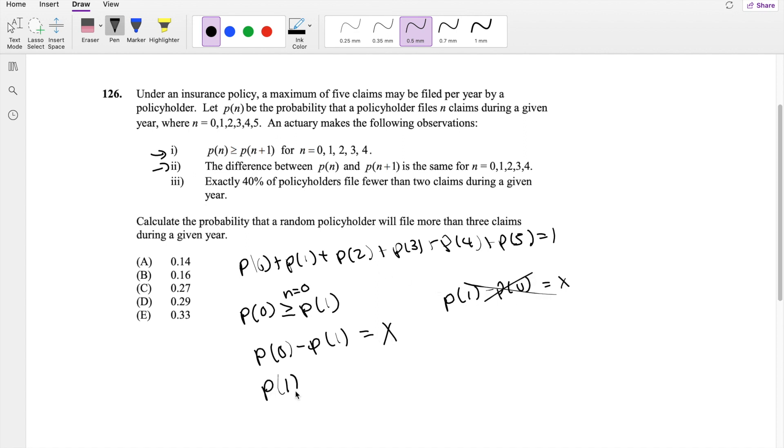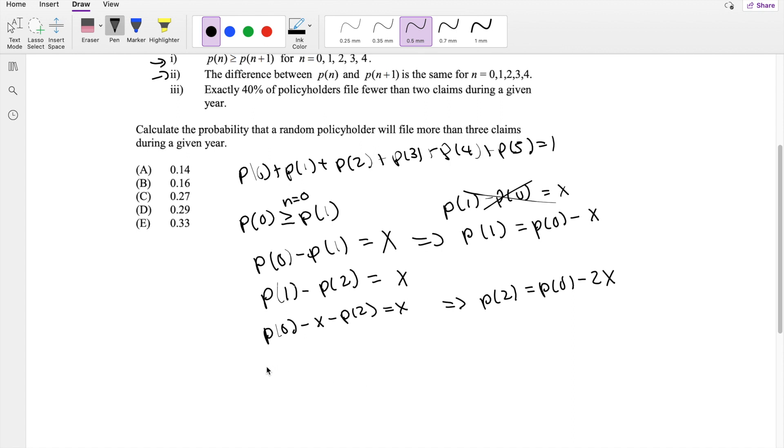Likewise, the probability of 1 minus probability of 2 is equal to x. So solving this for probability of 1, you actually get this is equal to probability of 0 minus x. And likewise, if I plug in here, the probability of 1 is equal to probability of 0 minus x minus probability of 2 is equal to x. I can actually simplify that this is equal to probability of 2 is equal to probability of 0 minus 2x. Again, if you ever need to stop the video, feel free to do so.